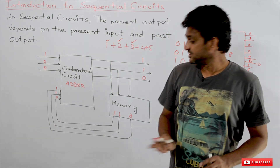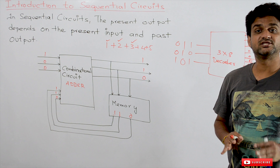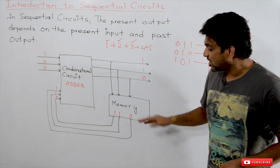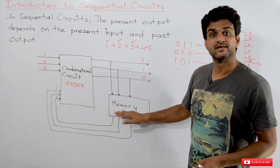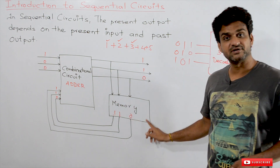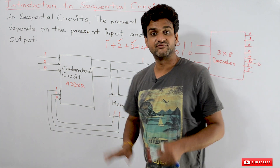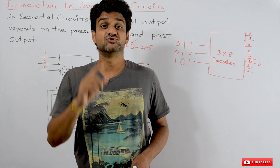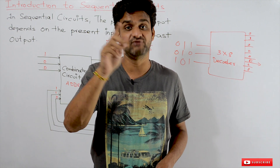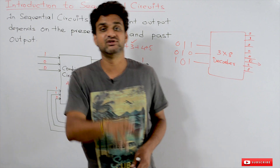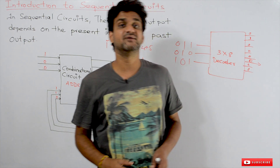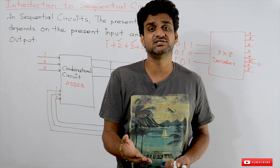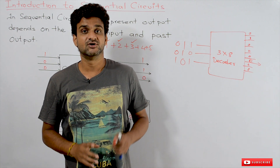The first important thing to understand before constructing sequential circuits is how values get stored. Every bit gets stored in memory on a device. The device used to store each and every bit is what we call a latch or a flip-flop. We will understand latches and flip-flops in the next classes; after understanding the memory unit, sequential circuits become much easier to understand.